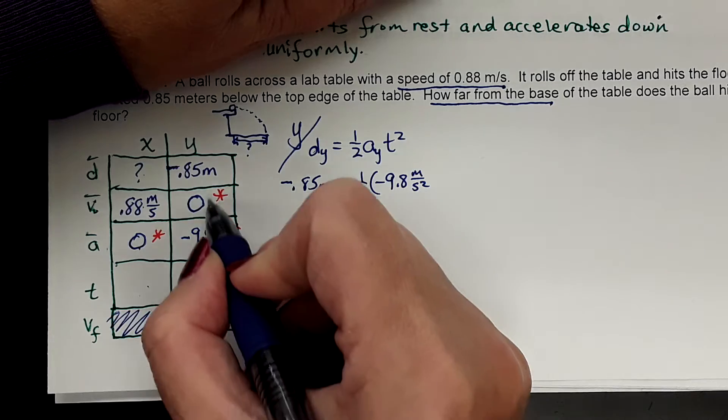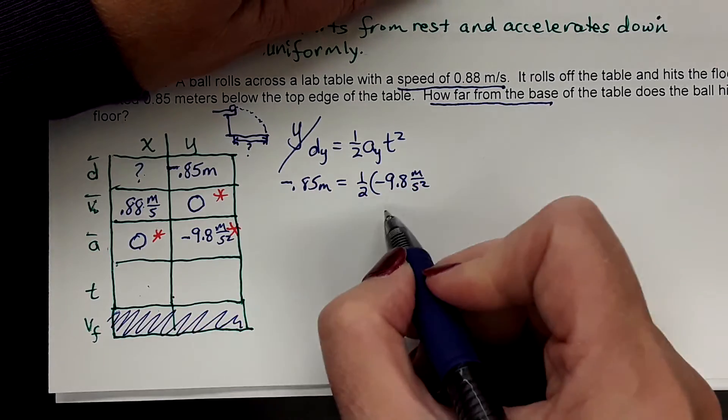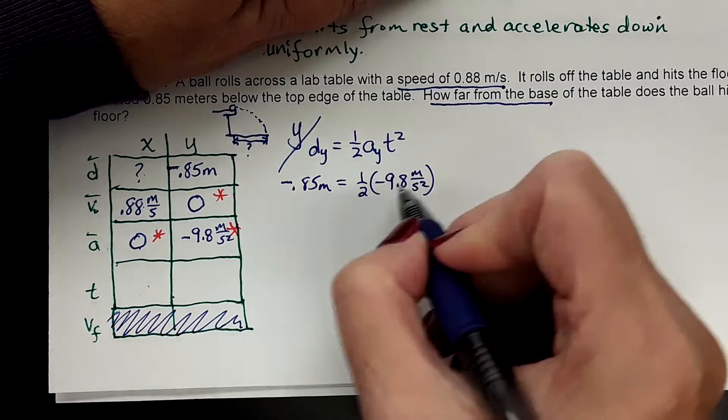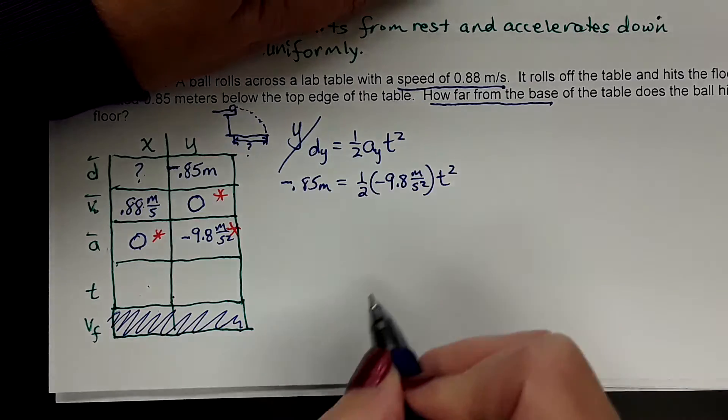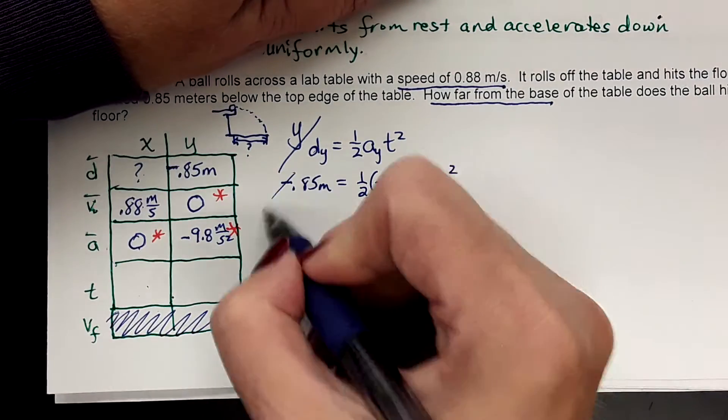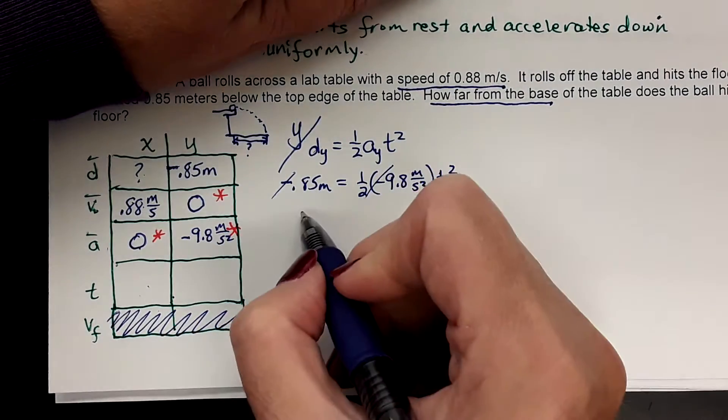Since the ball goes down 0.85 meters and down is negative, we should have that there. And that makes everything turn out nice, doesn't it? Because you can't take the square root of a negative. The negatives now cancel.